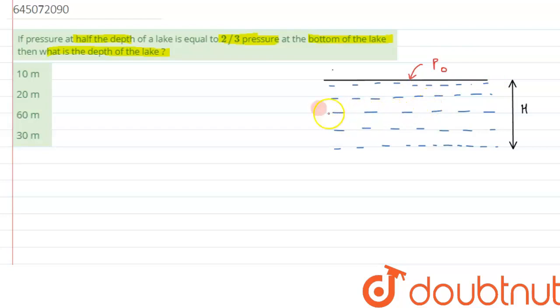In the first part, it says pressure at half the depth. So let's suppose that we are talking about this layer which is at a distance of H by 2. At this distance, we can write the pressure at half depth as atmospheric pressure plus gauge pressure, that is ρg(H/2).